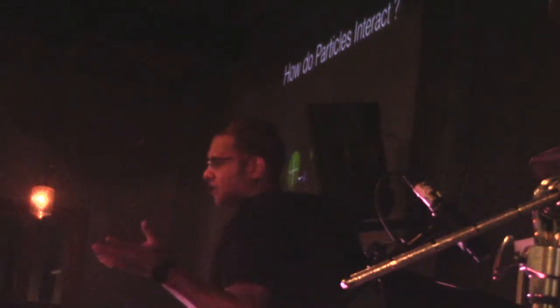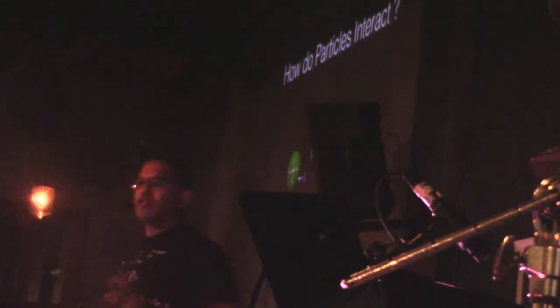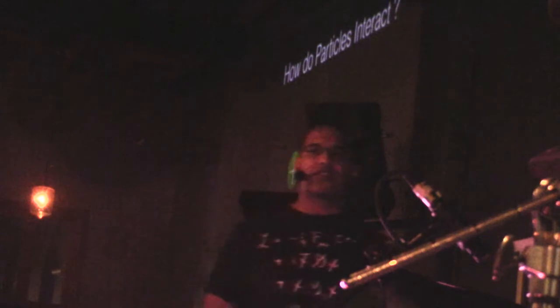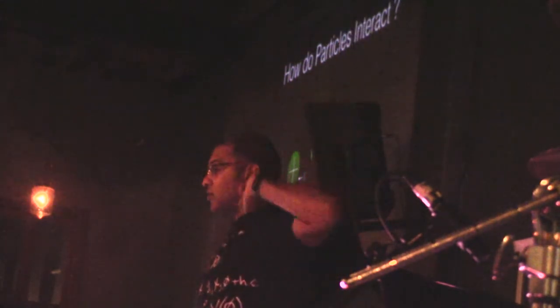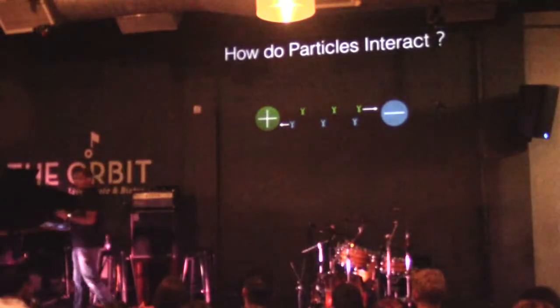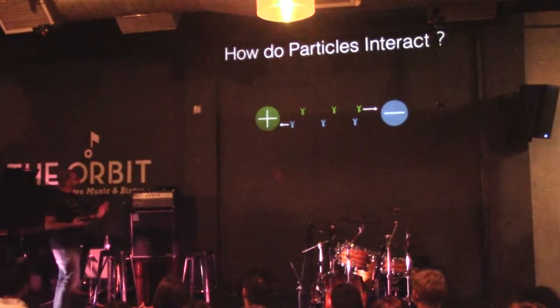There is an interaction between my electrons and the electrons on the moon. As I walk up and down the stage, the distance between me and the moon is changing slightly, so the interaction between my electrons and the electrons on the moon is changing. But when I move, the electrons on the moon only find out that I'm further away and the force should be weaker when the next photon from me gets there. The information about the interaction is carried at the speed of light, and this is true for all interactions.